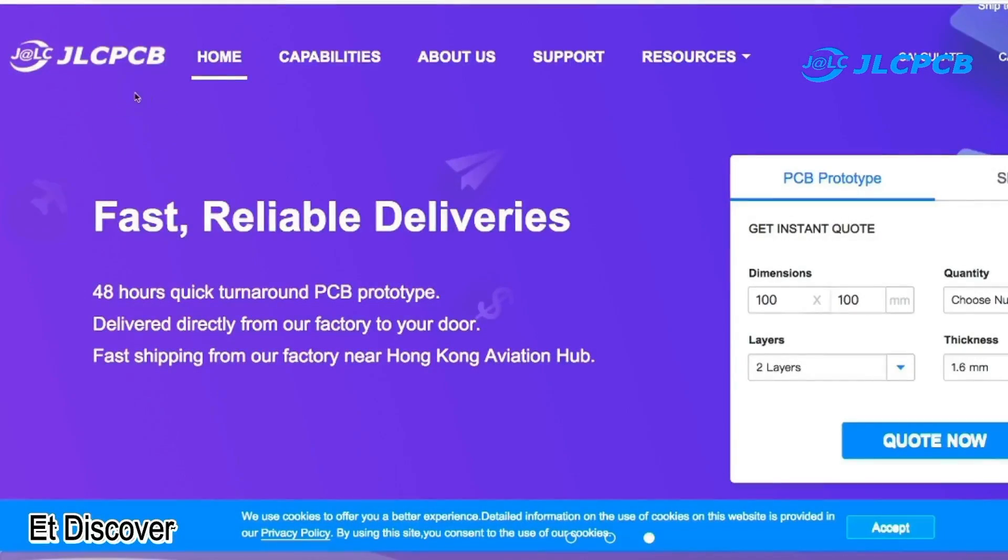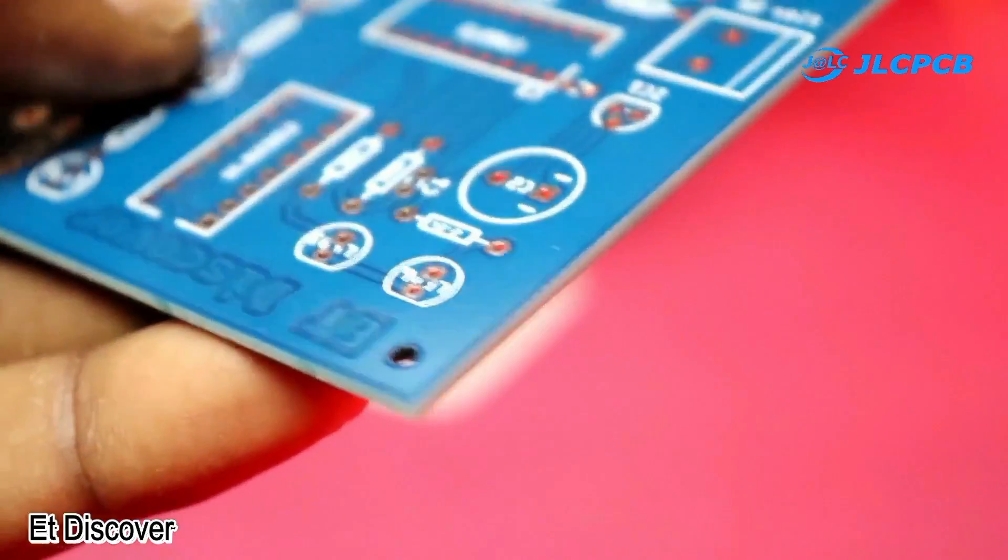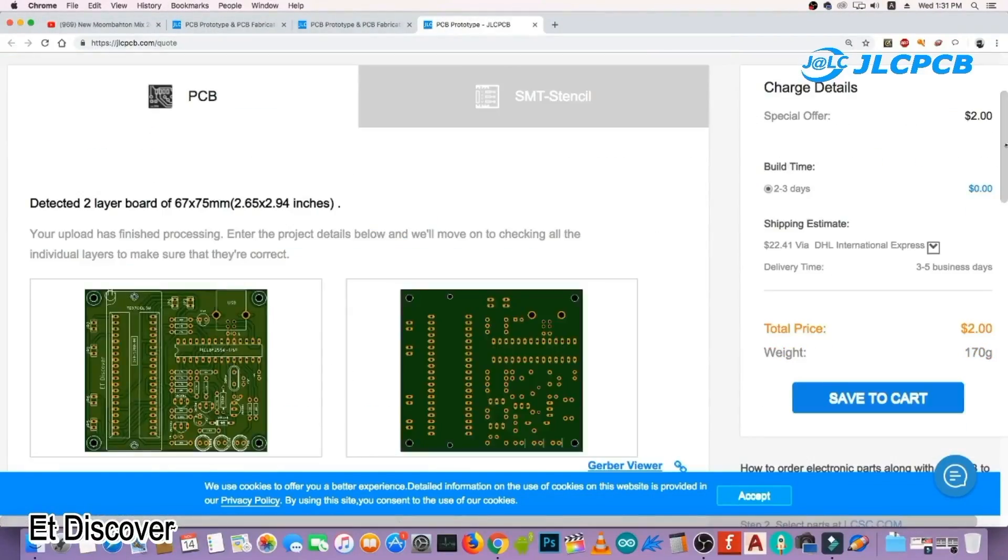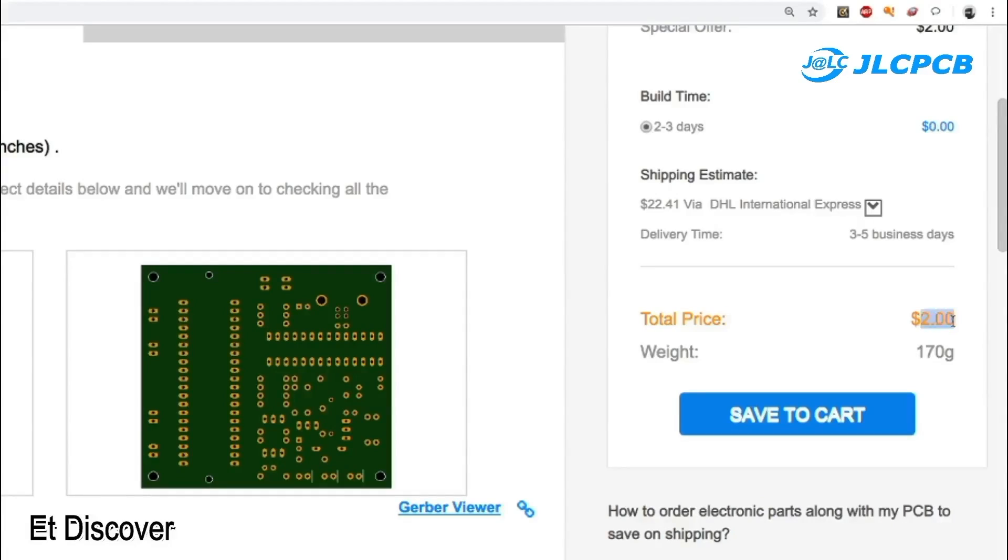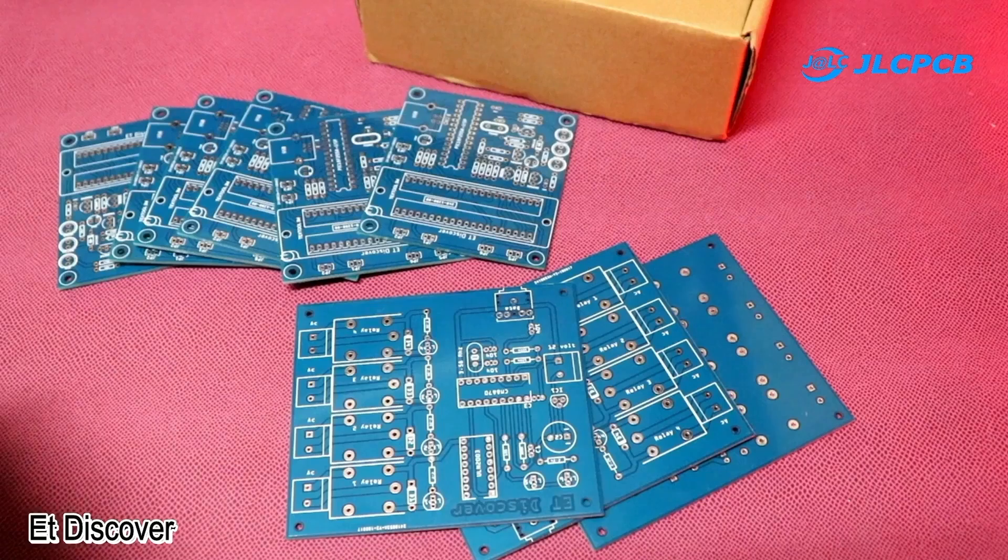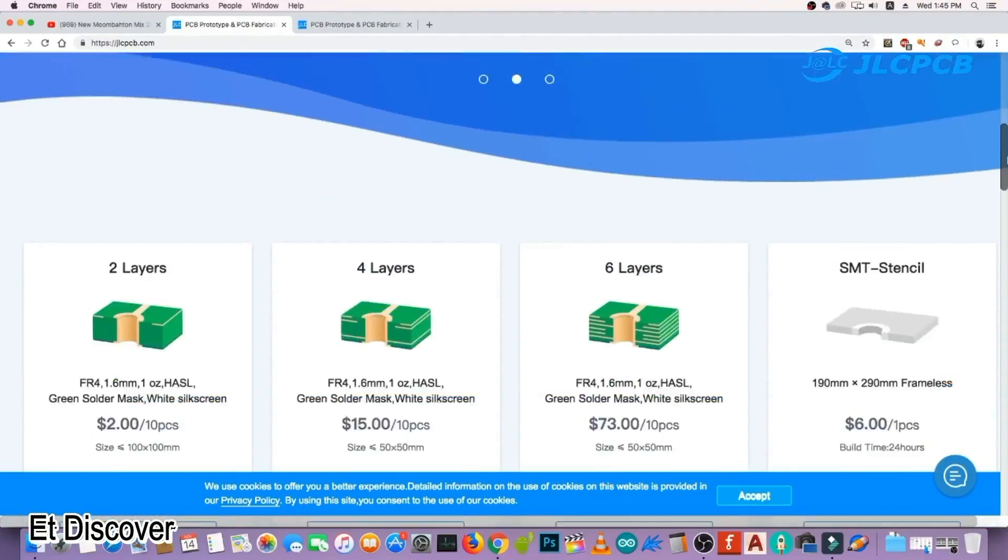This video is sponsored by JLCPCB. This is the largest manufacturer company in China. They provide very high quality PCB at very low price. Just upload your Gerber file to get 10 amazing PCBs for $2. They've also dropped their prices. You can get up to 30% off PCBs and 20% off stencils. Make sure to visit their website.